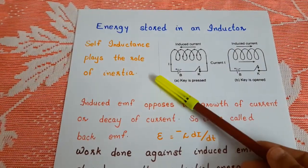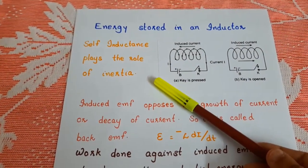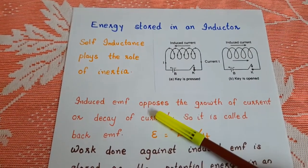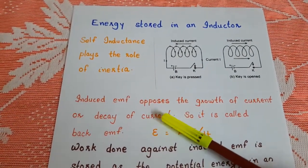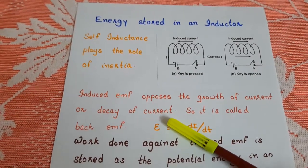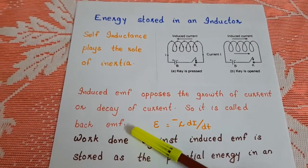So the self-inductance plays the role of inertia. The induced EMF opposes the growth of current or decay of current. So the EMF is called back EMF.